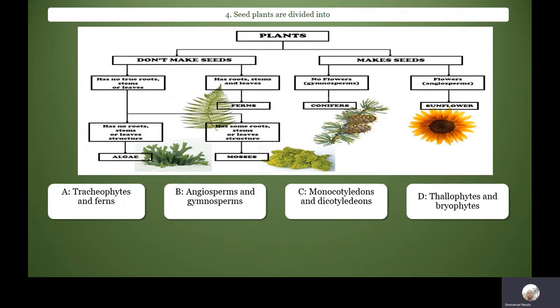So among the tracheophytes, there are some that can produce spores and there are those ones that can make seeds. So the ones that make spores we call them pteridophytes. Pteridophytes like the ferns can produce spores. They don't produce seeds. But remember they are tracheophytes, but they produce spores instead of seeds.